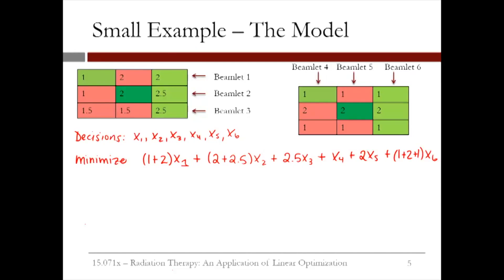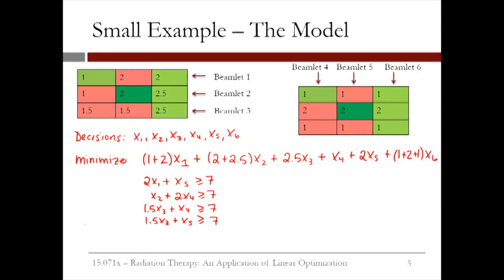Now for our constraints. First, we need to make sure that each voxel of the tumor gets a dose of at least 7. For the first tumor voxel: 2x1 + x5 ≥ 7. For the second tumor voxel: x2 + 2x4 ≥ 7. For the two tumor voxels in the bottom row: 1.5x3 + x4 ≥ 7 and 1.5x3 + x5 ≥ 7. For the spinal cord: 2x2 + 2x5 ≤ 5. And lastly, all decision variables must be non-negative: x1 through x6 ≥ 0.